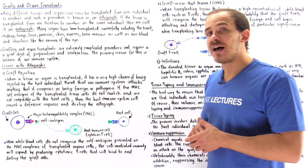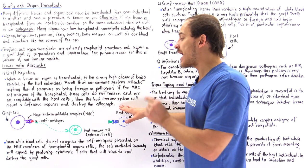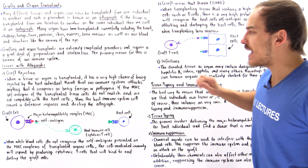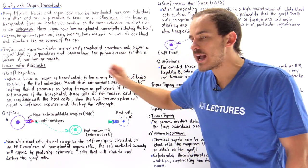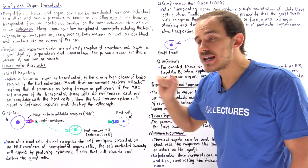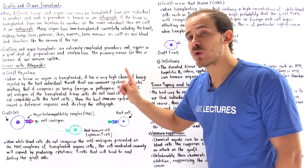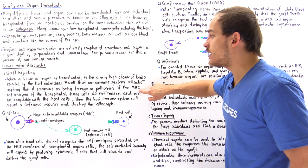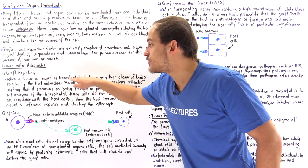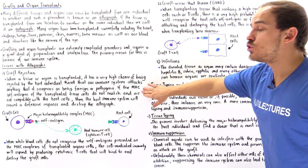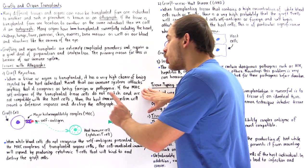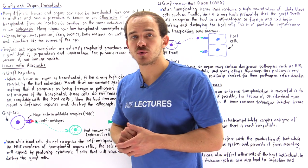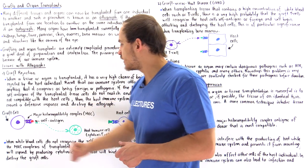The host white blood cells label the transplanted graft cells for destruction and begin destroying the allograft altogether. When a tissue or organ is transplanted, it has a very high chance of being rejected. If the MHC self-antigens of the transplanted tissue do not match those of the host, the host immune system will mount a defensive response and destroy the allograft.